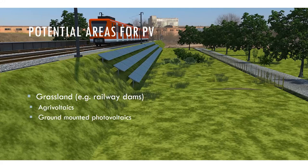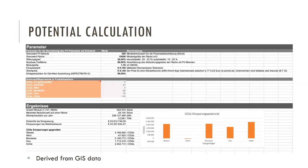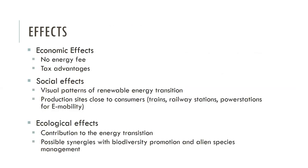Here is a rough visualization of how south-sided dams can be used for ground-mounted PV. From the GIS data, you can make rough estimations about costs and income with different energy fees, and also compare CO2 potentials across different energy production strategies like water, wind, biomass, gas, or coal — using sliders to calculate and develop strategies.